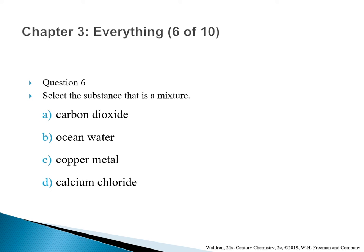Question 6: Select a substance that is a mixture. A. Carbon dioxide. B. Ocean water. C. Copper metal. D. Calcium chloride. The correct answer is B — ocean water. A mixture is defined as one or more pure substances combined together in a homogeneous or heterogeneous way. Ocean water contains not only water but also minerals, salts, and microbials — it is a combination of many substances. The other choices are all pure substances.